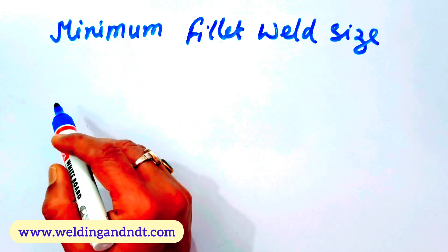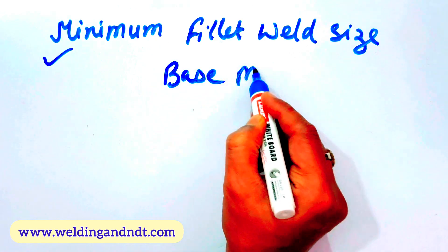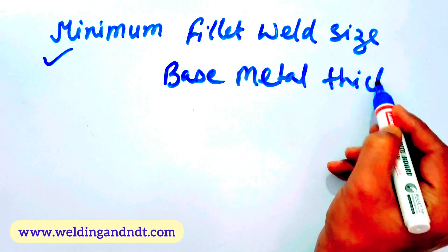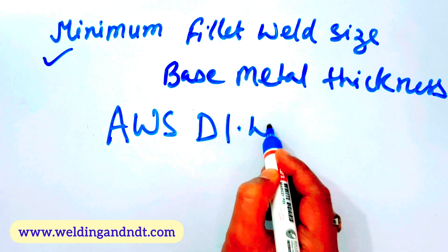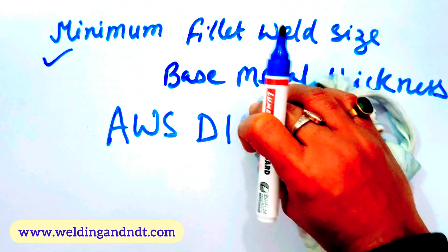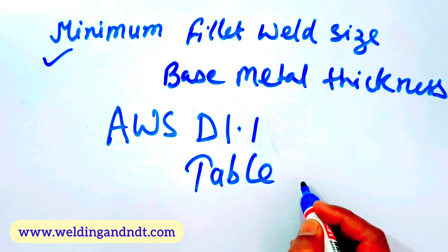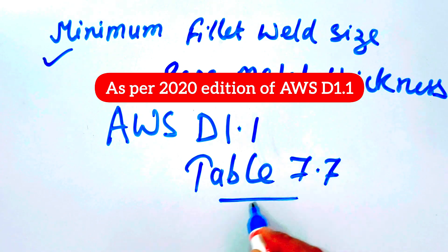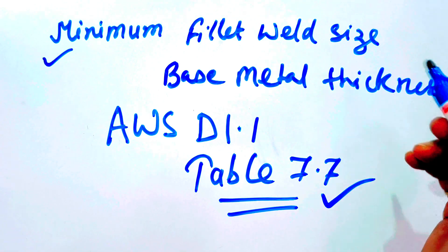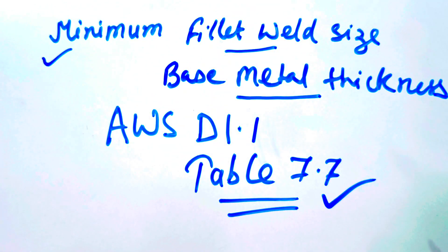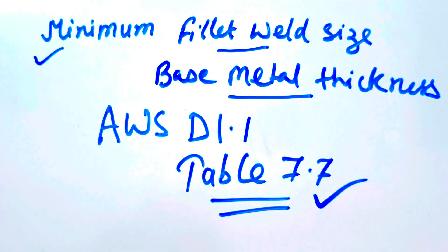Hello friends, welcome to my channel. In this video we'll learn about the minimum fillet weld size based on the base metal thickness, as per AWS D1.1 Table 7.7. AWS D1.1 is a code for structures. This table gives the minimum fillet weld size as per the base metal thickness.